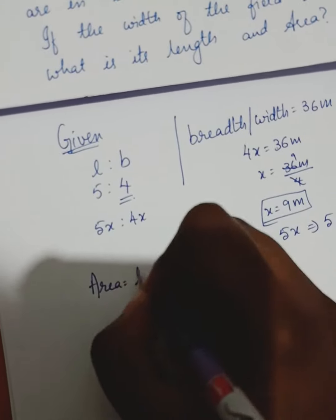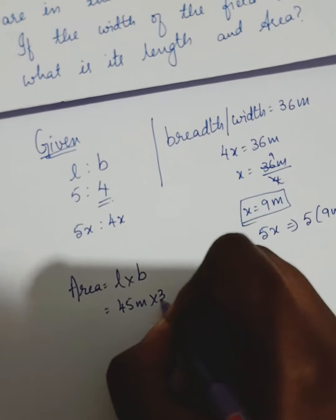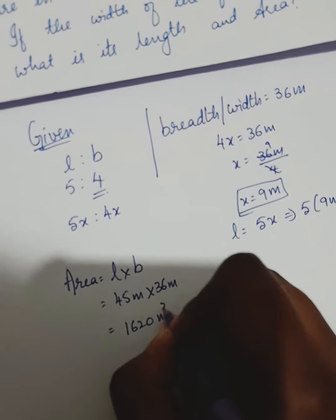Area of a rectangle equals to length into breadth. Now, length is 45 meter. Breadth is 36 meter. The product of this is 1620 meter square.